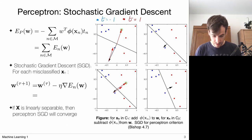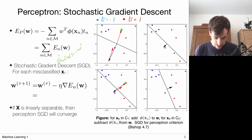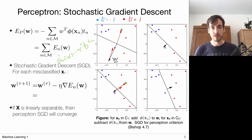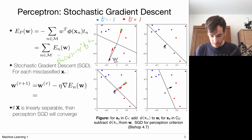The error for each data point n is given by minus W transpose times the feature vector times Tn. Now let's identify the misclassified data points. This set of weights W determines the decision boundary — it determines this plane — parameterized by this vector W, which is really the normal of this decision boundary.